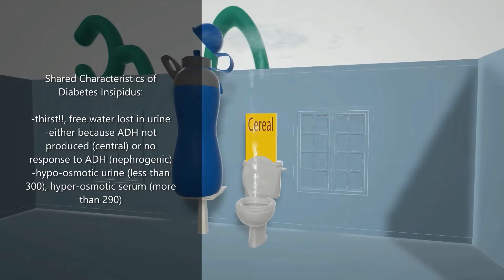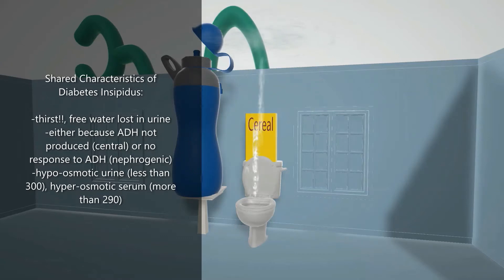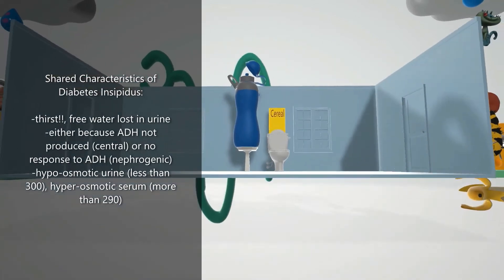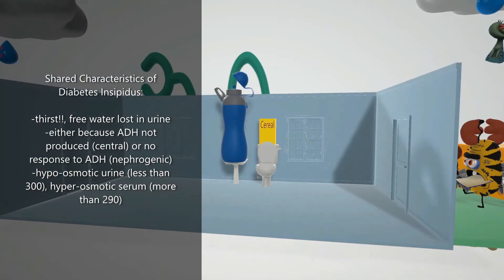The water shooting out of the toilet is very clear, not yellow — in diabetes insipidus urine osmolality is going to be less than 300. This is because ADH is responsible for free water retention, so free water is lost in the collecting duct, represented by the plumbing system in this bathroom. The collecting duct coming down under the toilet helps us remember that the deficiency is the inability to retain water at the collecting duct.